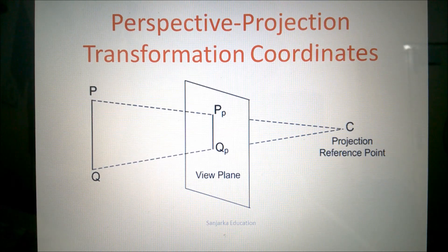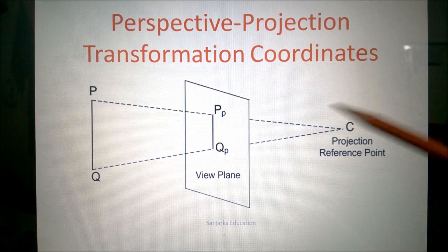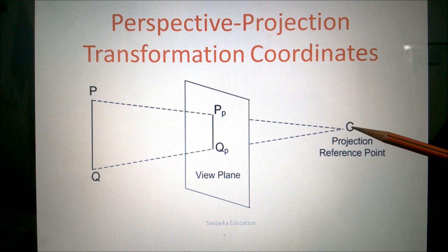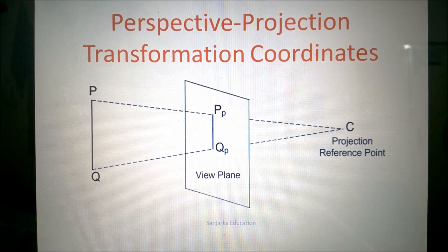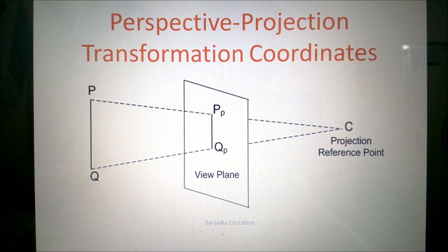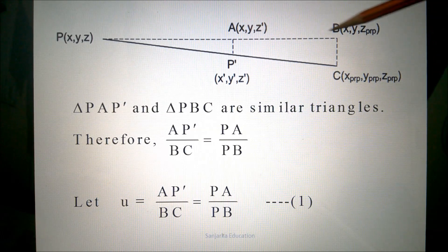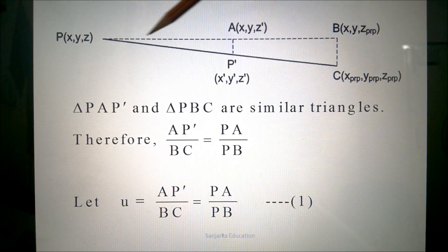Perspective projection transformation coordinates. In this diagram, you can see an object PQ and perspective projection has been taken on the view plane. It has reduced in size, and if you go further beyond, it appears to converge at a point C, and this point is known as the projection reference point. Now we will take up a point P and see how the coordinates of P are affected due to the perspective projection. The coordinate of P is XYZ, shown in dotted lines representing the orthogonal projections. The view is happening in the Z direction.